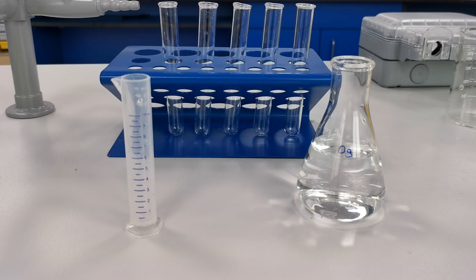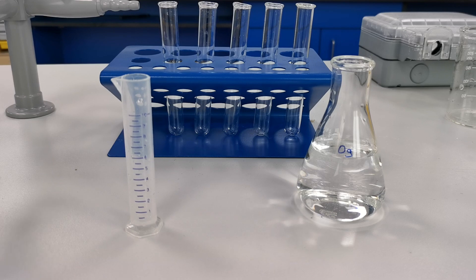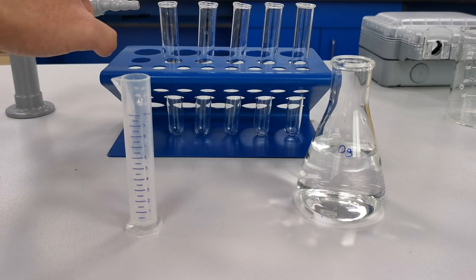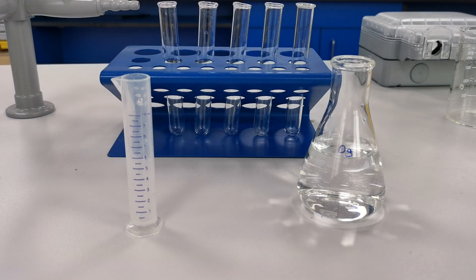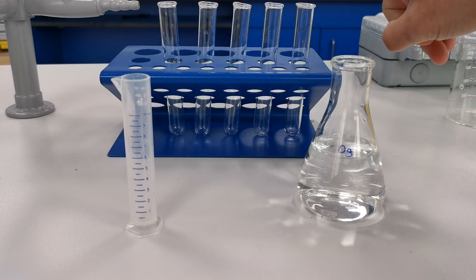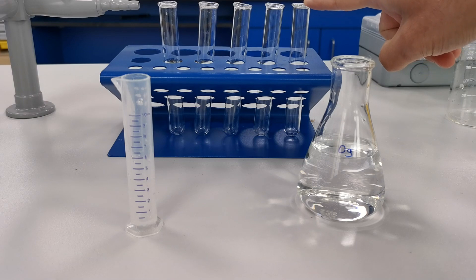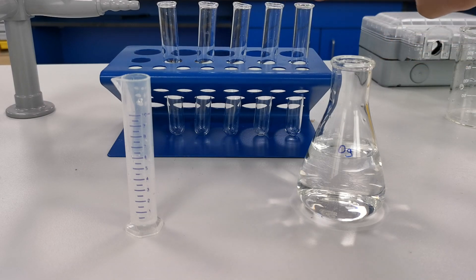Next I'm going to measure ten centimeters cubed of each sucrose solution and pour them into the five test tubes. I'm going to put the least concentrated solution into the left test tube and then gradually increase the concentration until we get to the most concentration in the right test tube. If it helps, you can label them.